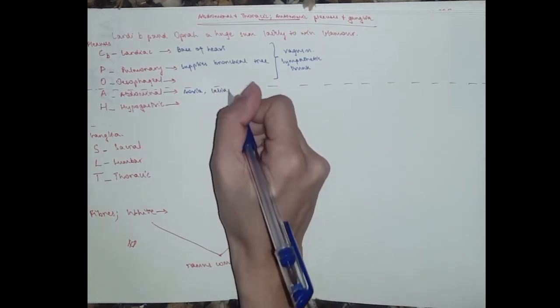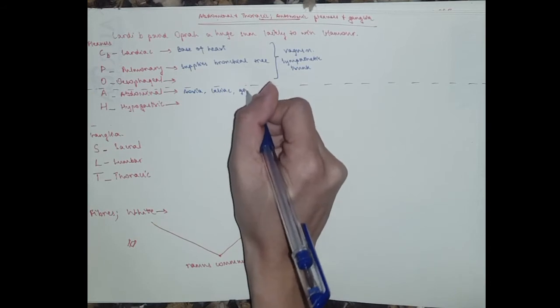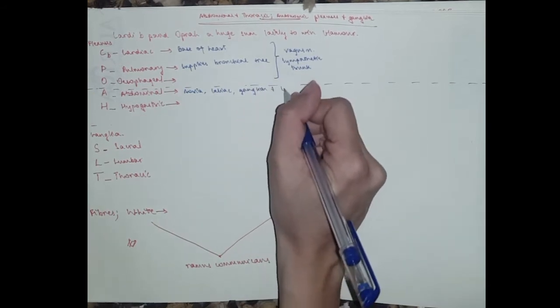Which is on the sides or in front of the aorta. And it's got a celiac plexus and the celiac ganglion, if you remember ganglion, and a lumbar ganglion as well.